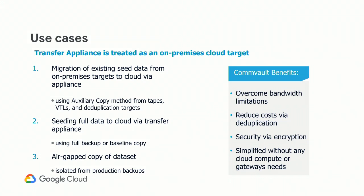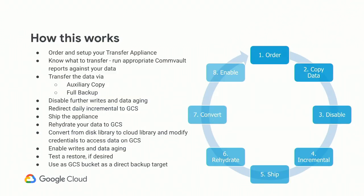The benefits of using a backup product with Transfer Appliance include overcoming bandwidth limitations, plus deduplication and compression rather than copying data flat. You have encryption capability, and you don't need additional appliances or gateways to move data to the Transfer Appliance. From an architecture standpoint, we treat Transfer Appliance as though it were an on-prem GCS bucket — so once data moves to GCS, you don't have to worry about changing formats. The process steps: ordering, setup, selecting what to transfer, performing the transfer, shipping the appliance, rehydrating the data in your GCS bucket.